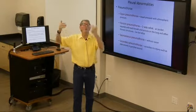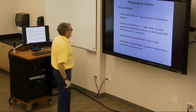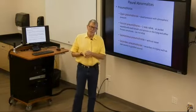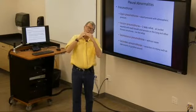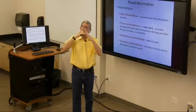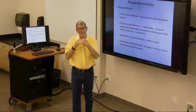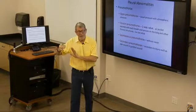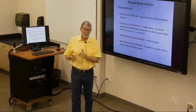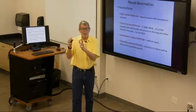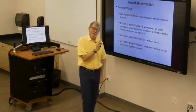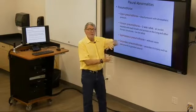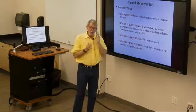A tension pneumothorax is much more serious. Damage to lung tissue creates a flap that lets air out but blocks it from getting back in. With every breath, air is sucked out into the bad space and can't return to the lung, so the pneumothorax gets bigger and bigger, pushing the lung, heart, vena cava, and everything over toward the other side. It can be lethal — you have to address a tension pneumothorax very quickly.